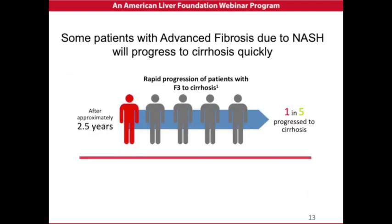The important thing is that people who have F3, which is advanced fibrosis but not cirrhosis, many of them will progress to cirrhosis fast, within two and a half years. We don't know who these people are yet, but we know that this happens and are working on finding ways to identify who is more likely to progress to cirrhosis in a short time versus those who will progress over a longer time, like 10 to 20 years.